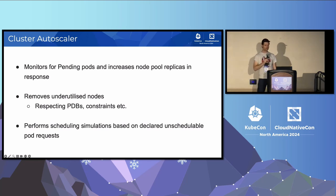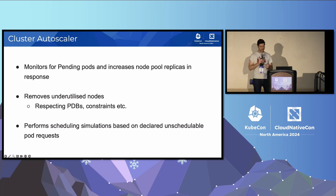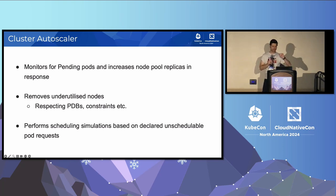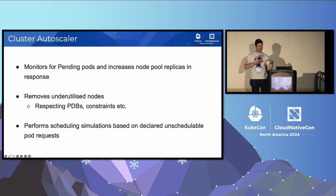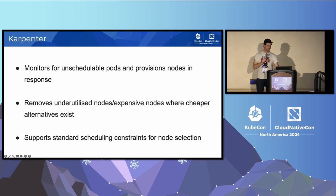Brief overview of Cluster Autoscaler. Cluster Autoscaler monitors for pending pods and increases node pool replicas in response. It removes underutilized nodes when respecting PDBs and other scheduling constraints. If nodes are underutilized, it can find a way to run on the same operational requirements with a lesser operational footprint, and it does so by performing scheduling simulations based on the declared config in those pending pods.